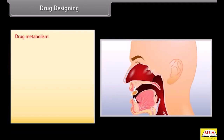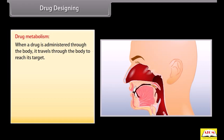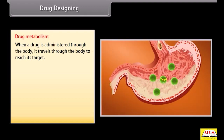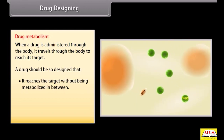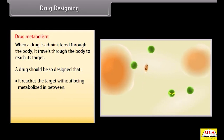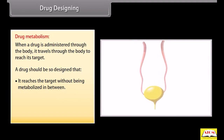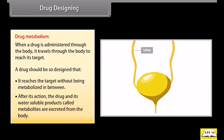Drug metabolism: when a drug is administered, it travels through the body to reach its target. A drug should be designed so that it reaches the target without being metabolized in between. Also, after its action, the drug and its water-soluble products called metabolites should be excreted through urine, feces, exhaled air, saliva and sweat without causing harm to the body.